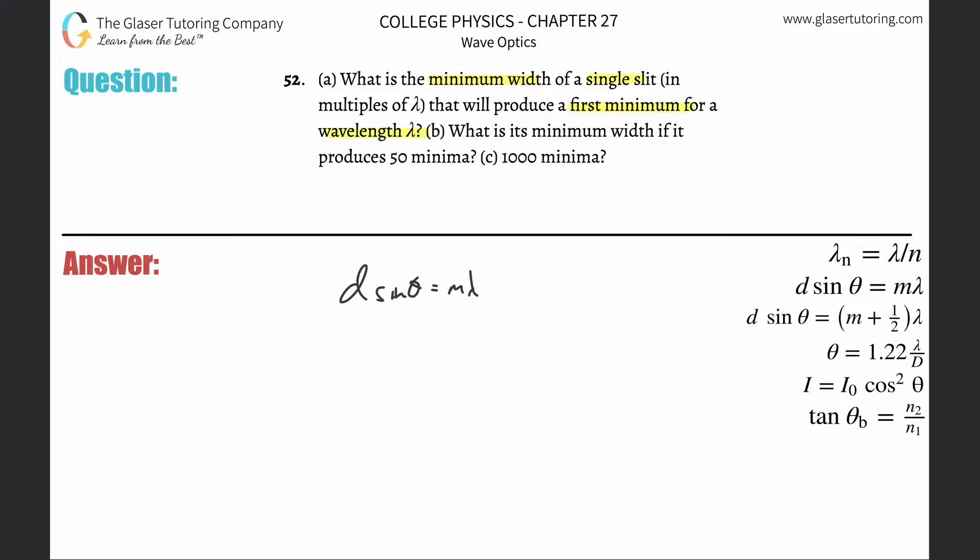Now, we got to talk about d, right? So just simply divide or solve for it. So we're going to divide out the sine of theta. So now what it's asking is what is the minimum width for a single slit that will produce a first minimum? So what is m? Well, it says first minimum, so m is one.